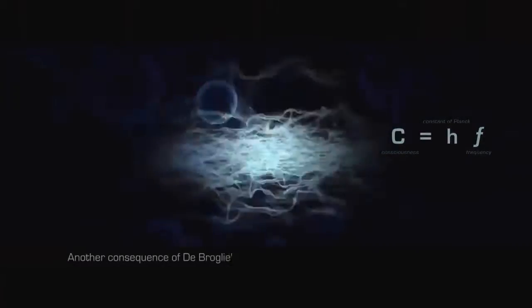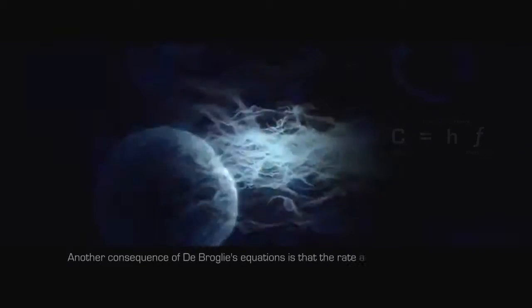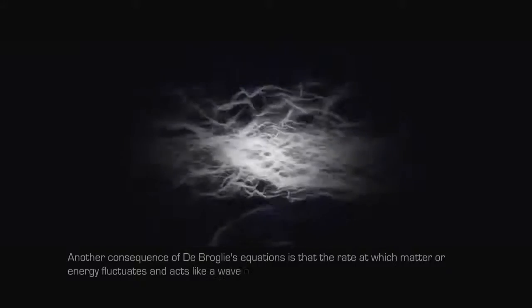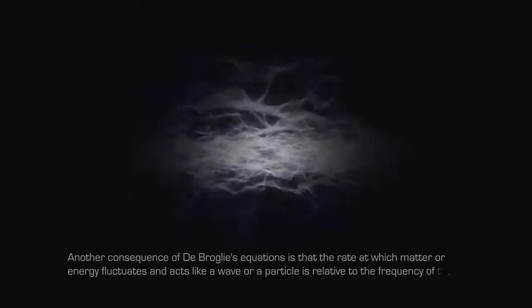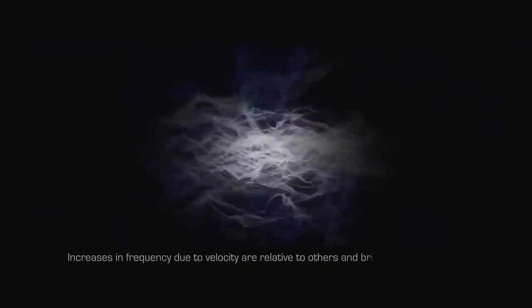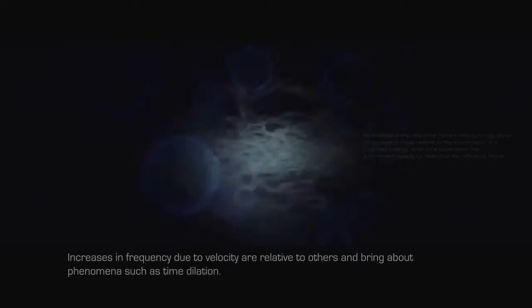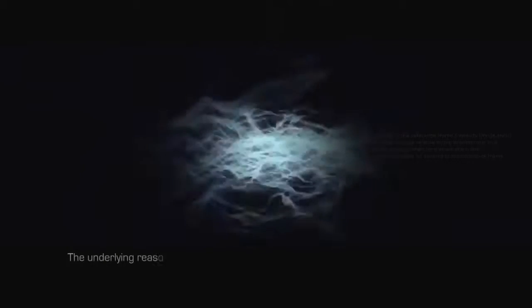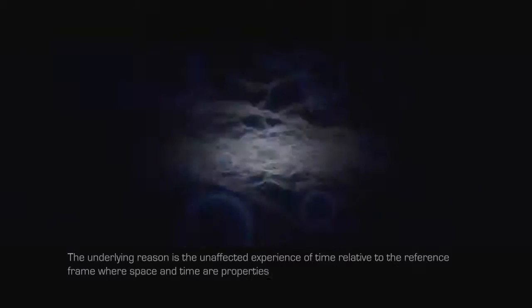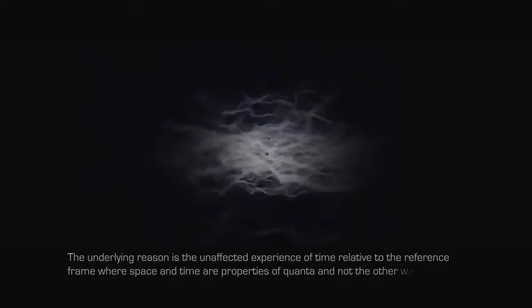Another consequence of de Broglie's equations is that the rate at which matter or energy fluctuates and acts like a wave or a particle is relative to the frequency of the frame of reference. Increases in frequency due to velocity are relative to others and bring about phenomena such as time dilation. The underlying reason is the unaffected experience of time relative to the reference frame, where space and time are properties of quanta and not the other way around.